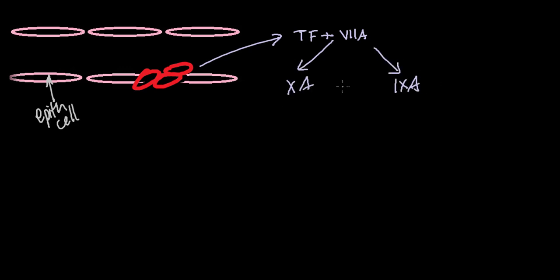This subsequently activates factors 10 and 9. Activated factor 9 combines with activated factor 8 to activate factor 10. Activated factor 10 with activated factor 5 generates a small amount of thrombin. The small amount of thrombin activates platelets as well as factors 5, 8, and 11.